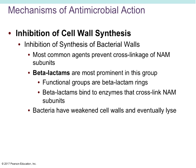For inhibition of cell wall synthesis, the most common agents prevent the cross-linking of the N-acetylmuramic acid subunits that make up the NAG-NAM, or peptidoglycan, cell wall. Beta-lactams are a very prominent group of inhibitors of cell wall synthesis. When microbes are exposed to this drug, they have very weakened cell walls and are very susceptible to osmotic lysis. The most common agents prevent that cross-bridge linking of NAG and NAM, and the outcome is that bacteria will have weakened cell walls.